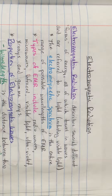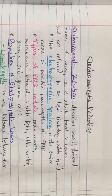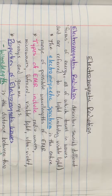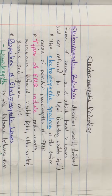This video is for page 15 of your interactive notebook about electromagnetic radiation. Electromagnetic radiation, or EMR, describes several different forms of energy, all of which travel in waves and are referred to collectively as light — and this includes what we think of as light, which is the visible light.